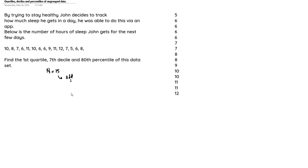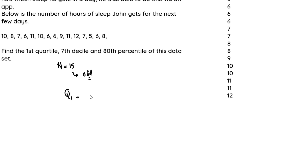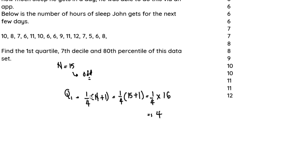The formula for the first quartile Q1 is: Q1 = (1/4) × (n + 1). That equals (1/4) × (15 + 1) = (1/4) × 16, which equals 4. So our Q1 is in the fourth position.